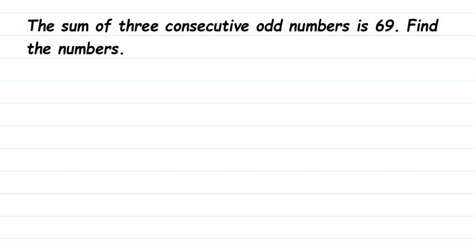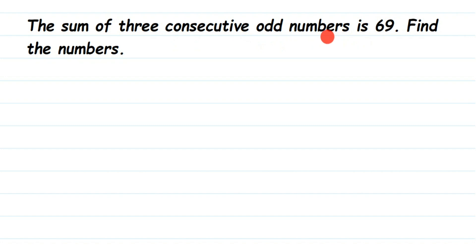Here's a question: the sum of three consecutive odd numbers is 69 — find the numbers. We're given that if we add three consecutive odd numbers, the sum is 69, and we have to find those three consecutive odd numbers.